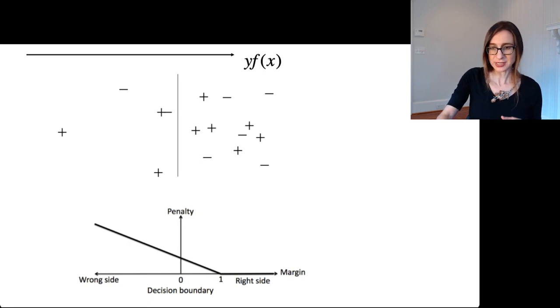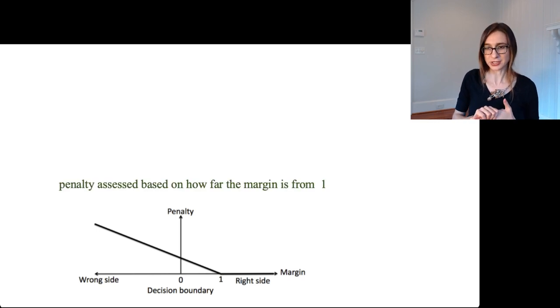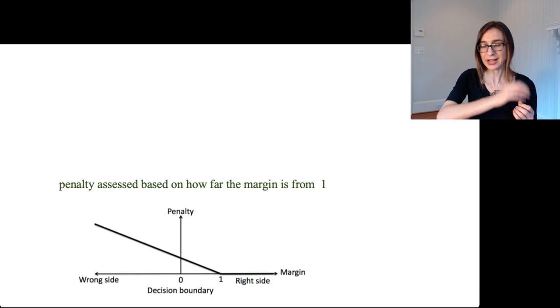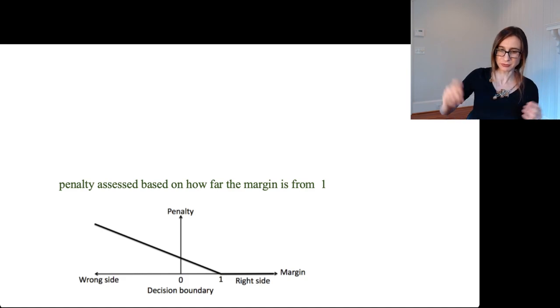Now SVM assesses a penalty based on how far the margin is from one. So if you are on the wrong side of the decision boundary, you suffer a penalty that would be proportional to how far you were from having a margin of one. So not just being classified correctly, but you have to have a margin of one.